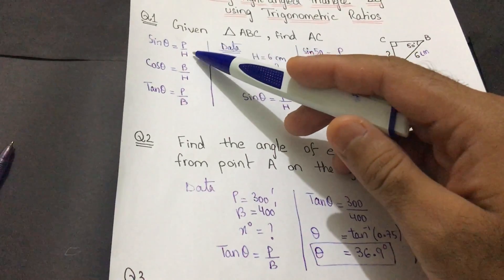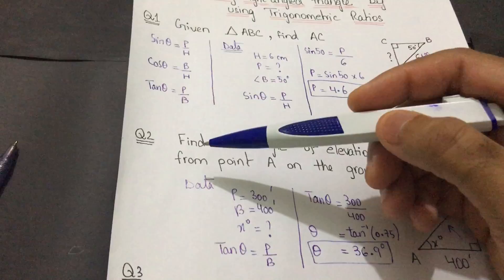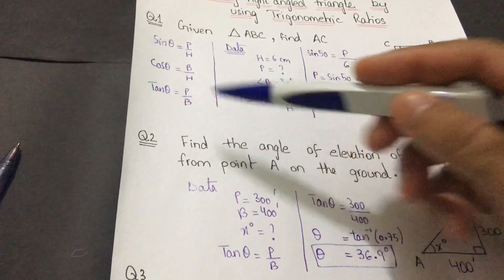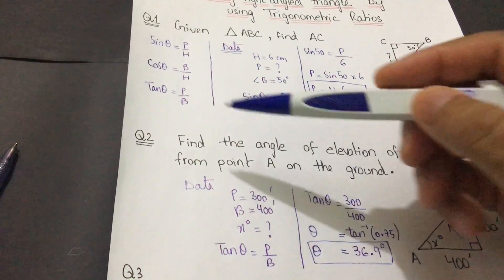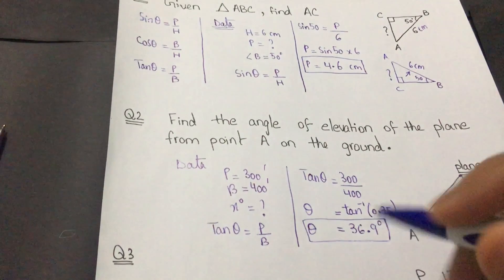The first one, which is sine, has perpendicular and hypotenuse, and that will not work in my situation. The second one has base and hypotenuse, but I need perpendicular and base. That is the third one: tan theta.